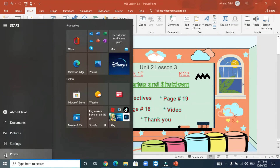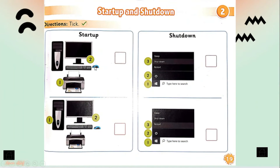Now we will go to page number 19. Here we have two exercises. The first one: which picture is correct? They show you how to start up the computer with two steps in each option. Do you start from the printer and then the monitor, or do you click the power button on the computer case and then the power button on the monitor? Which one is correct? Of course, this one — excellent!